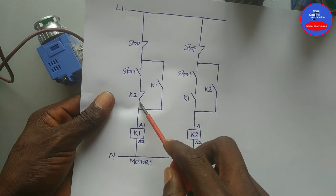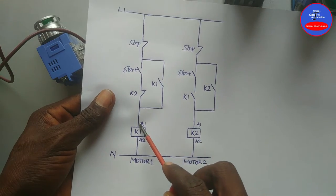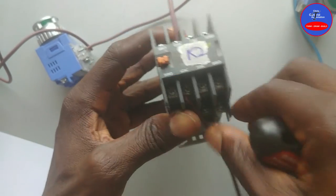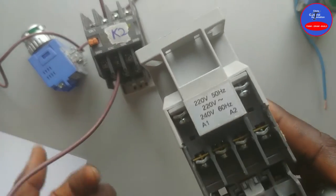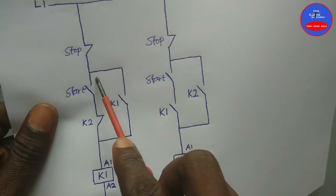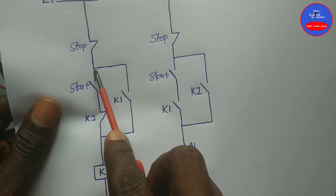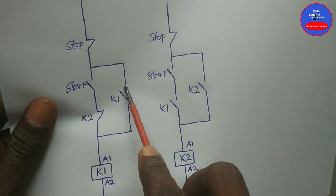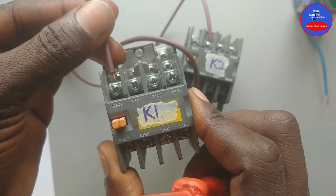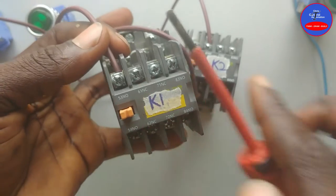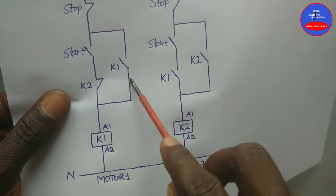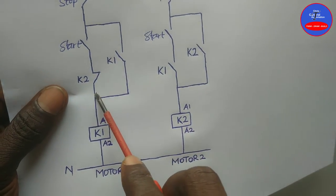From the other side of the start button it goes to one side of the close contact on K2. From the other side of the K2 close contact it goes to A1 of K1. We tap from the input side of the start button to one side of the open contact on K1, and we tap from the other side of the open contact on K1 to the K2 close contact.